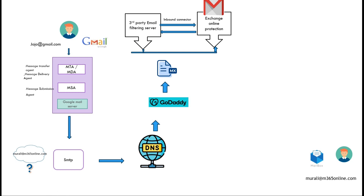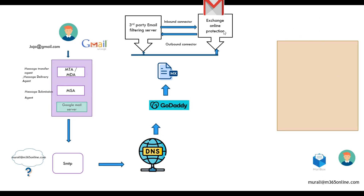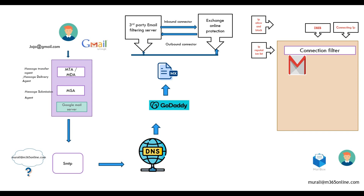If the MX record is pointed directly to Exchange Online Protection, the email will be delivered to EOP directly without needing an inbound or outbound connector. Once the email is delivered to Exchange Online Protection, it goes through multiple email filters that scan it one by one. The first filter is the connection filter, which first runs Directory-Based Edge Blocking (DBEB).